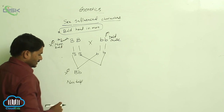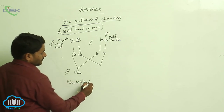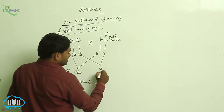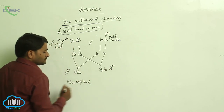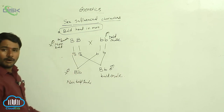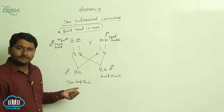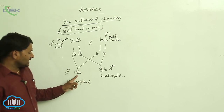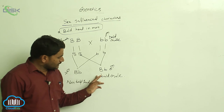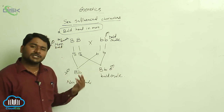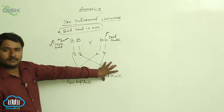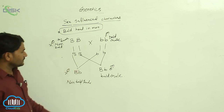If that same BB' genotype is considered as a male, it produces a bald male. So even though one dominant allele is present, the male is affected with bald head, while the female with the same allele is normal. Male is affected, female is normal. This is the sex-influenced character pattern.